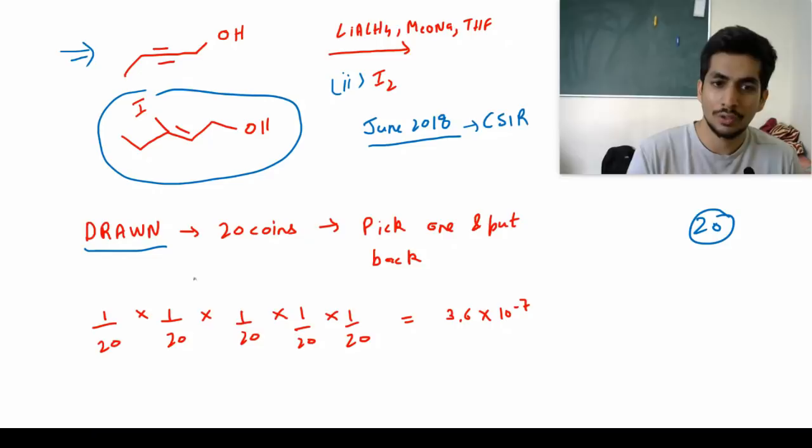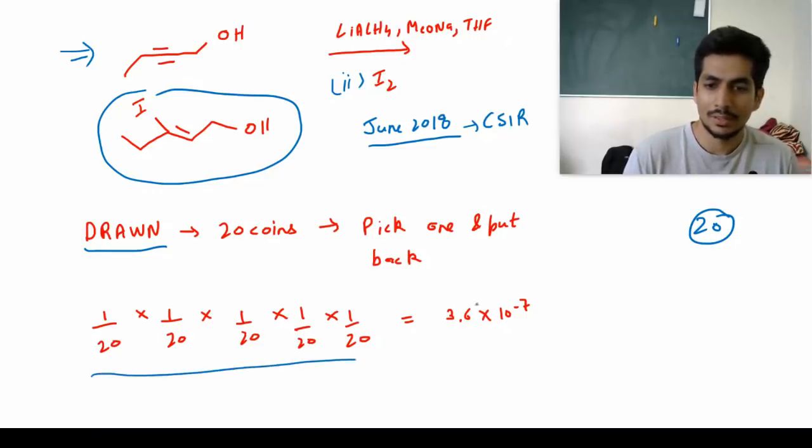What is the probability that when you draw the first five coins you will get the word 'drawn'? One of the options was that this cannot be possible because some letters are not assigned to any amino acid, but all of them are assigned. So all you had to do was 1/20 × 1/20 × 1/20 and so on, and the answer came out to be about 3.6 × 10^-7.